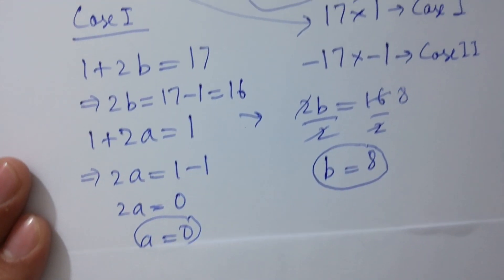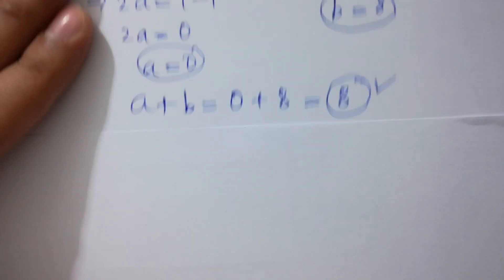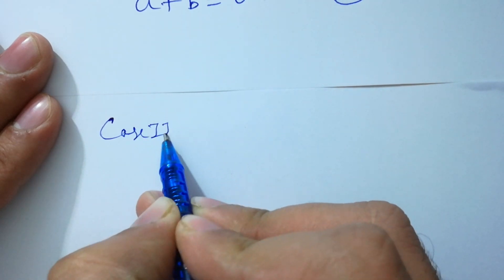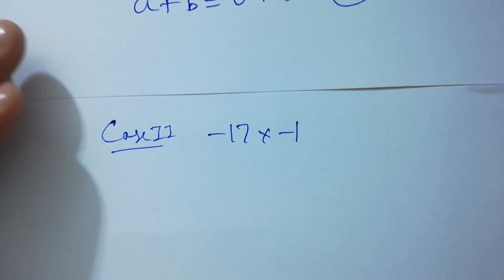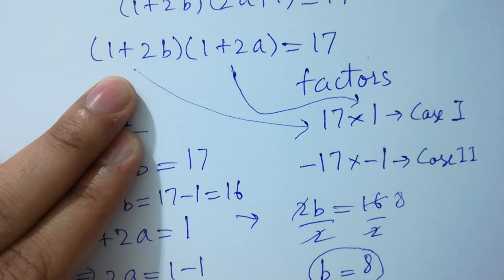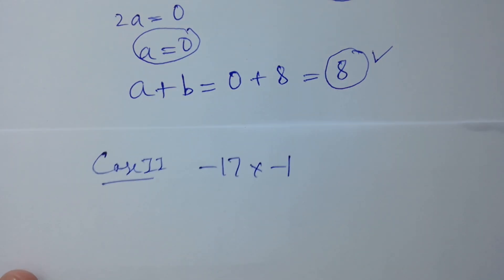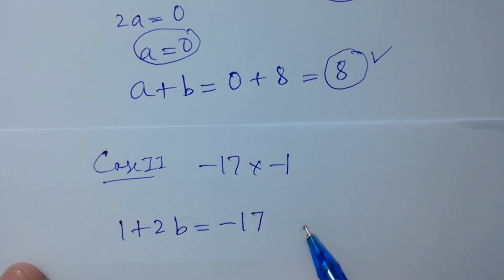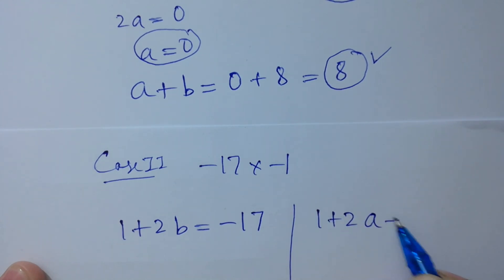Now take the second case: minus 17 times minus 1. Here 1 plus 2b equals minus 17 and 1 plus 2a equals minus 1.